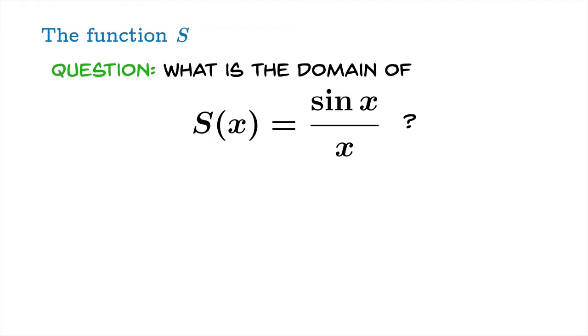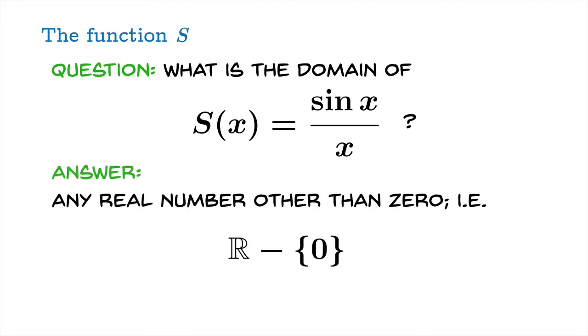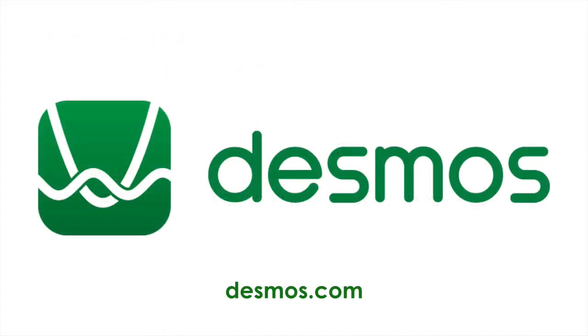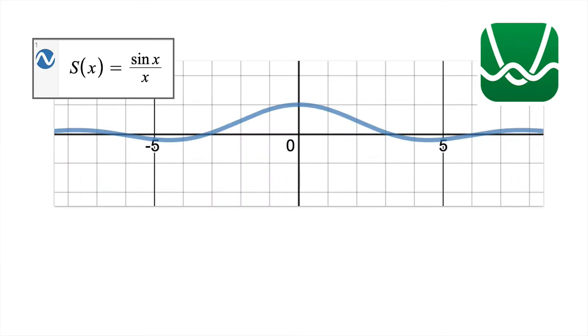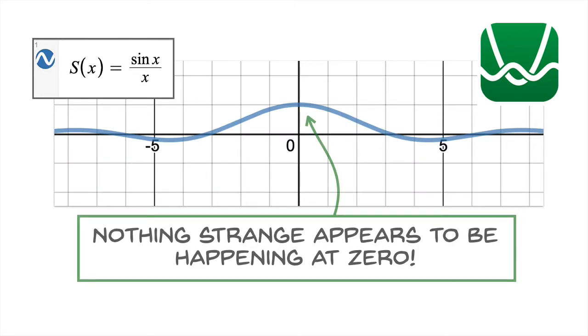Well, hopefully the answer leaps to your mind. It's all reals except zero. You can't plug in zero for x. You can't divide by zero. So, that's a problem. Okay. That's the domain of this function s. Now, let's use Desmos, this wonderful online free utility, to plot this function. And the first thing you'll notice is that nothing strange seems to be happening at zero. So, what's going on? The domain was not supposed to include zero.